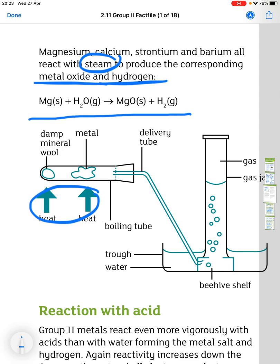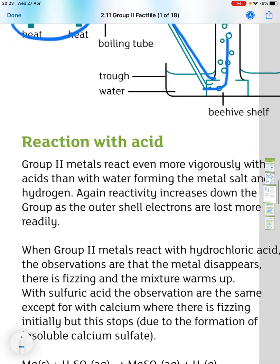And you would achieve that by heating in two places on the test tube at the same time. You have damp mineral wool for the water and then the metal is placed next to it in the tube. Then, with a delivery tube, the gas travels down through the beehive, bubbles up through the water in a gas jar and is collected at the top of the gas jar here.